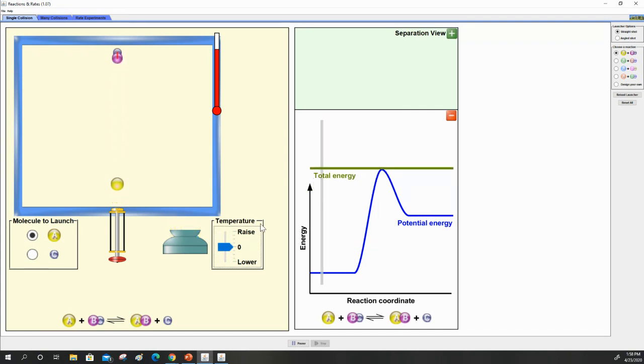We can bring the temperature up above activation energy, and now we see the reactants making products, the AB new product. So here's a new product right here.